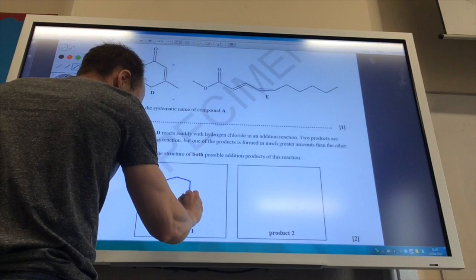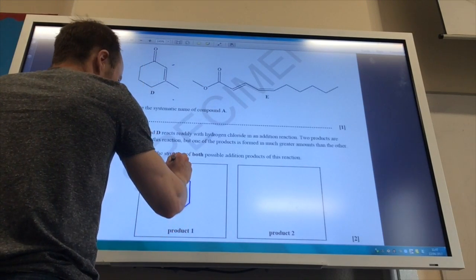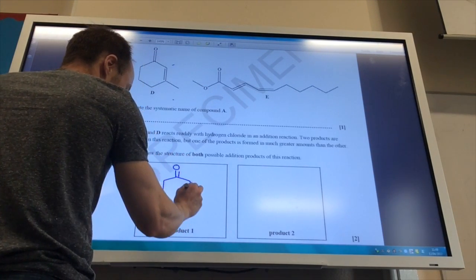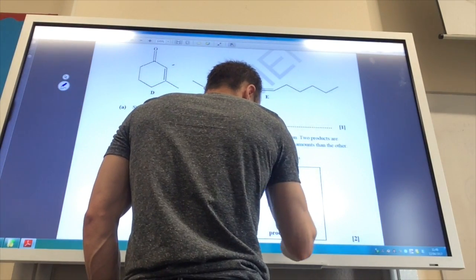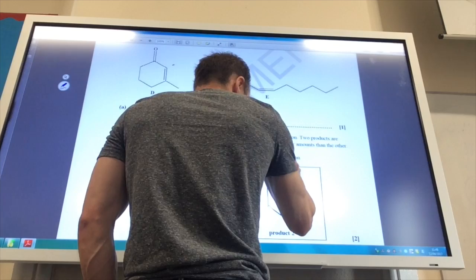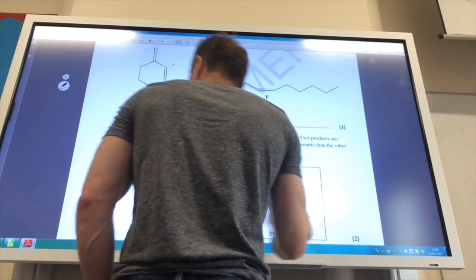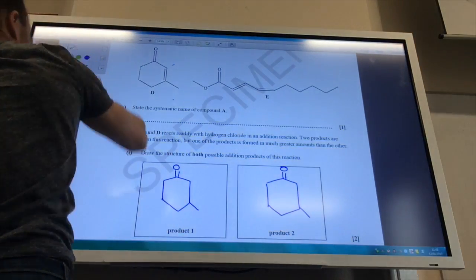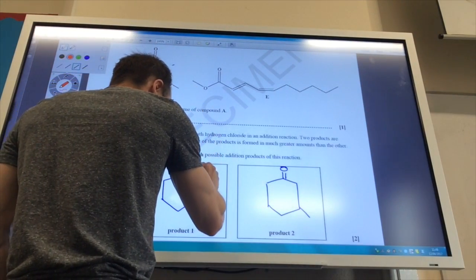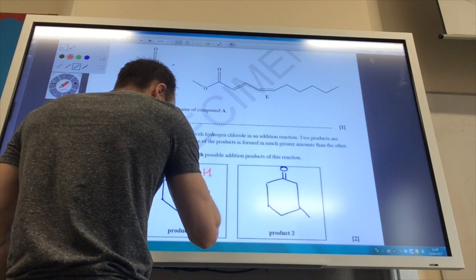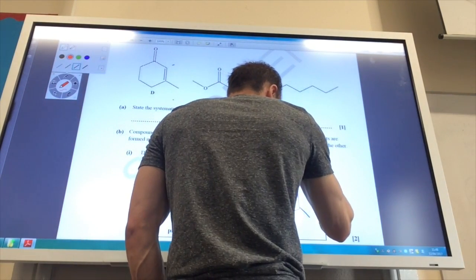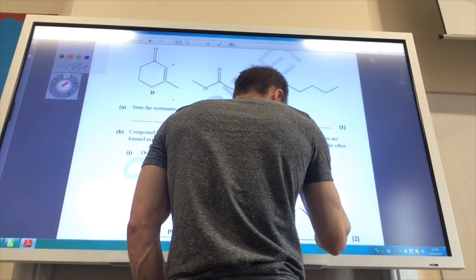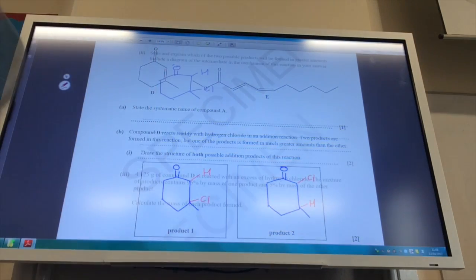So the main thing is, do the main structure first, but I'm not going to put my double bond in, because that has been added across, like so. And then I could add my H there and my Cl there, or I could add my Cl there and my H there, like so.